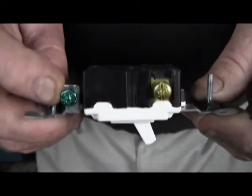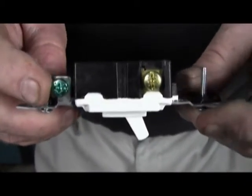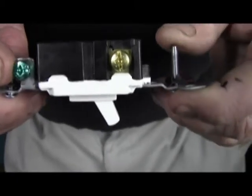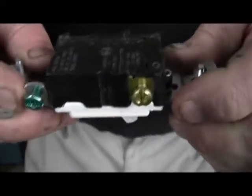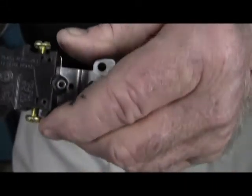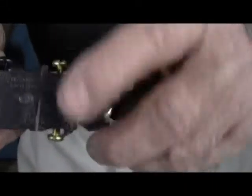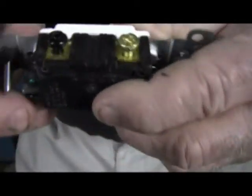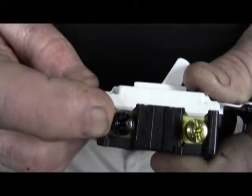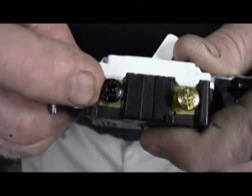And keep in mind, ground everything is one of the most important codes that you'll ever come across. So these two copper colored screws always go on to the travelers. This black colored screw goes on to the leg, whether it's the line or the load is unimportant.